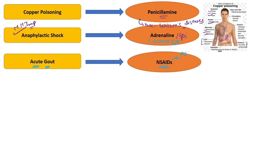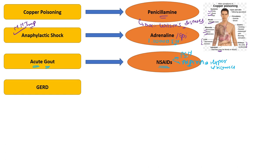For acute gout, we give NSAIDs, except paracetamol and aspirin. Aspirin itself causes hyperuricemia — it increases uric acid levels — so we do not use aspirin in the treatment of gout. Paracetamol does not have anti-inflammatory action, and since gout involves joint inflammation, paracetamol is also not effective in treating gout.